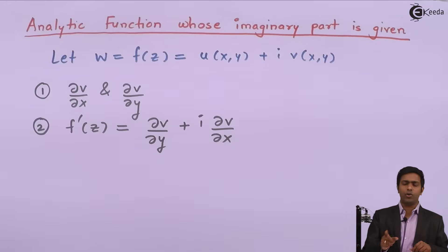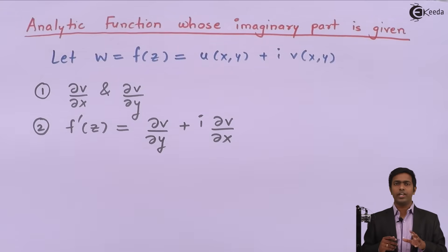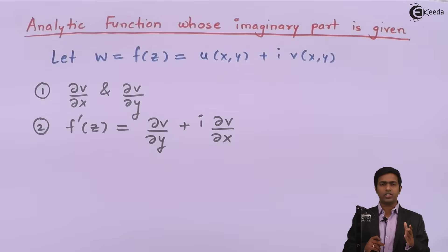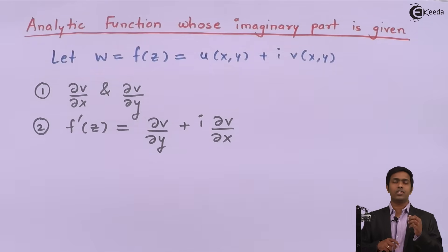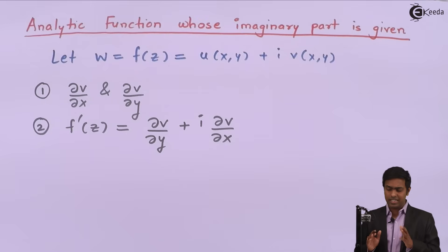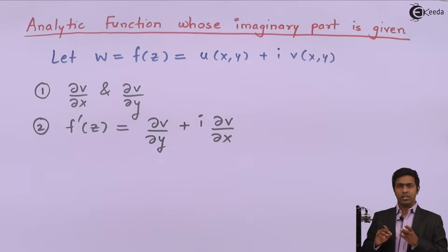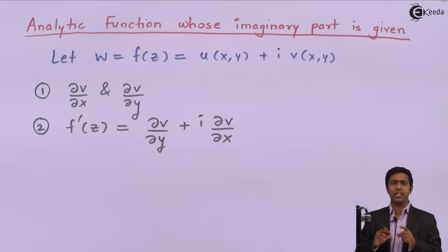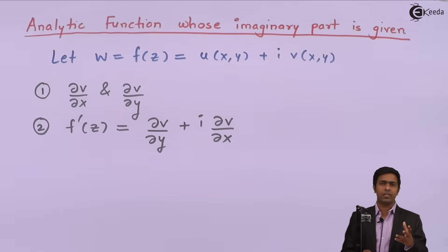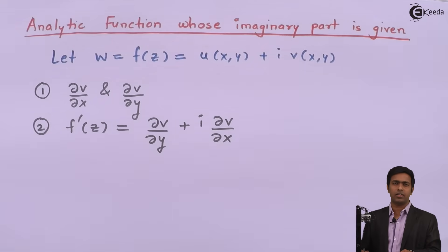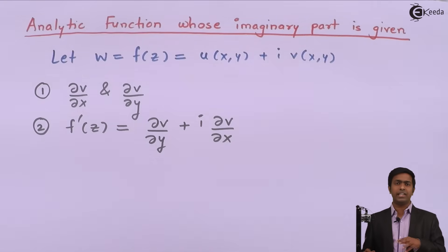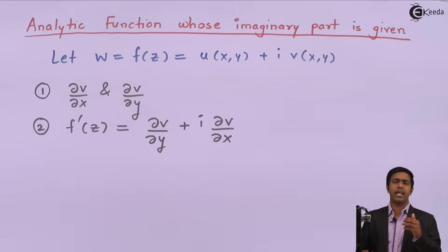To get f(z), we need to integrate f'(z) with respect to z. But to integrate, we need f'(z) in terms of z, not x and y. To convert f'(z) into terms of z, we apply Milne-Thomson's method, in which we replace x with z and y with 0 in f'(z).